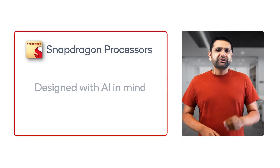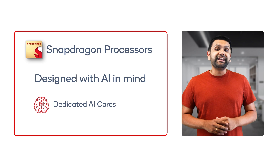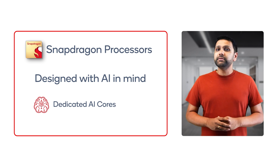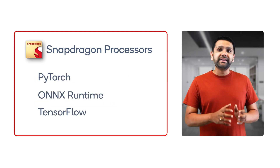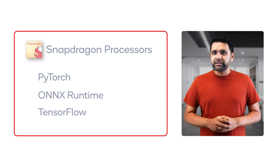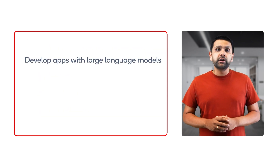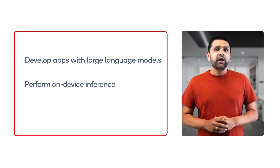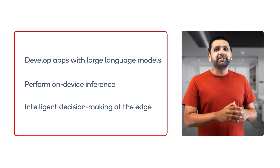Another important aspect to consider for development is the AI and machine learning capabilities. Snapdragon processors are designed with AI in mind. They feature dedicated AI cores and provide support for AI frameworks such as PyTorch, ONNX Runtime, and TensorFlow. This means you can develop applications that leverage large language models, perform on-device inference with remarkable speed, and achieve intelligent decision-making right at the edge.